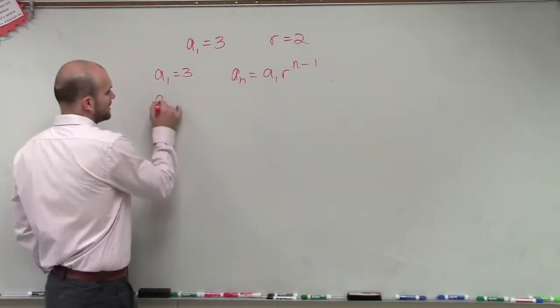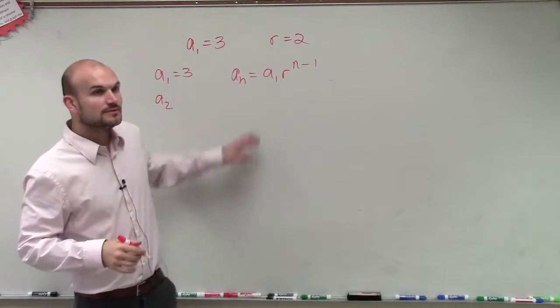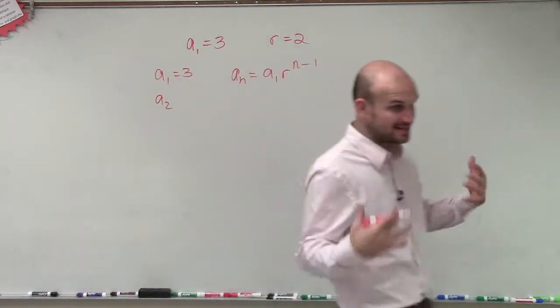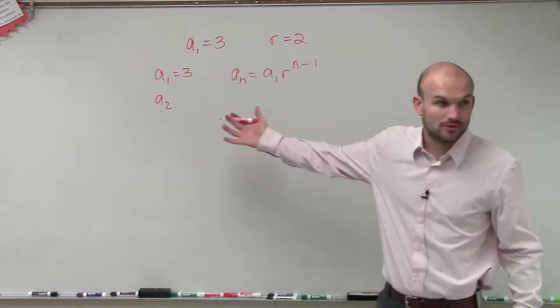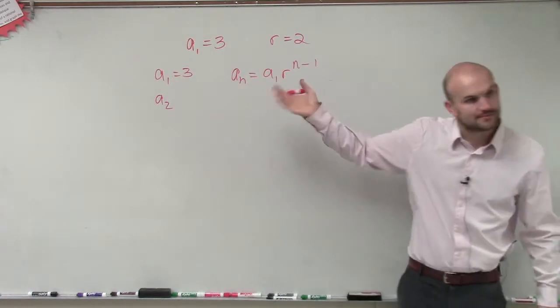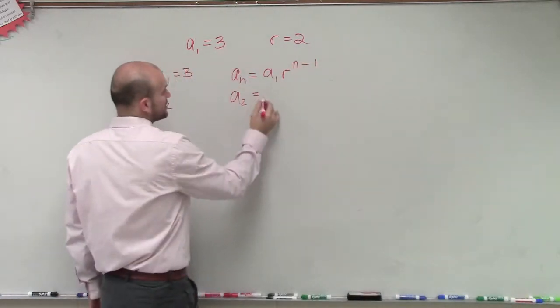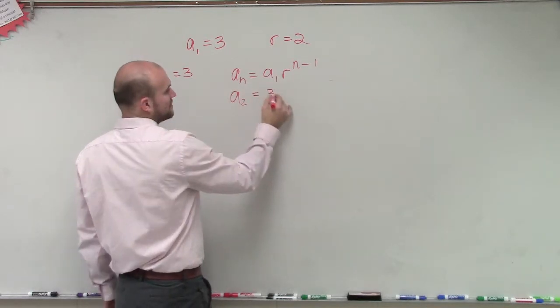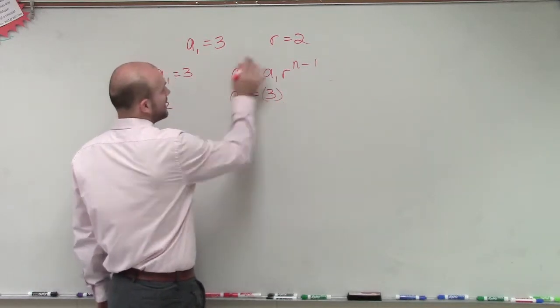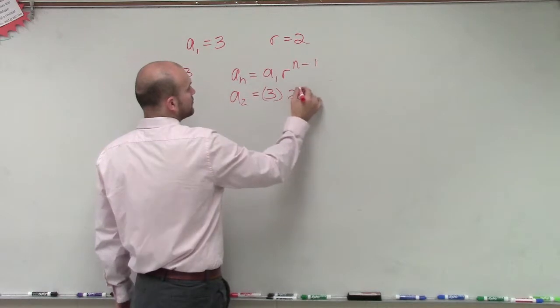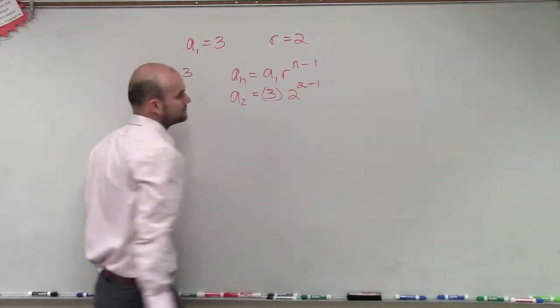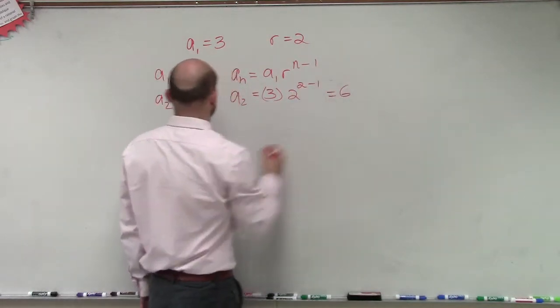If I want to find what a_2 is, since this is a geometric sequence, it's going to be in this format. Therefore, a_2 equals a_1 times r, which is 2, raised to the 2 minus 1, which equals 6.